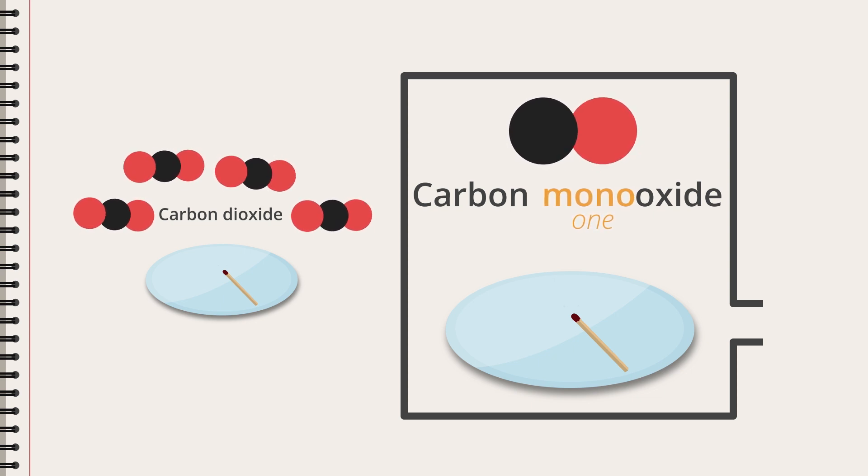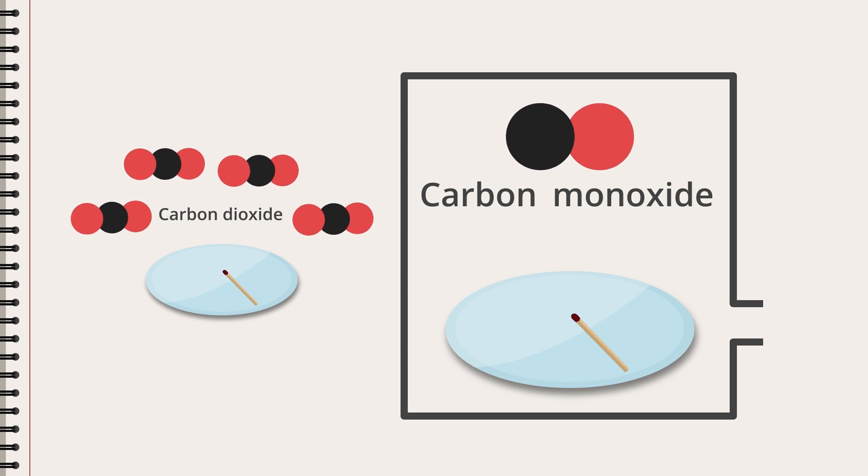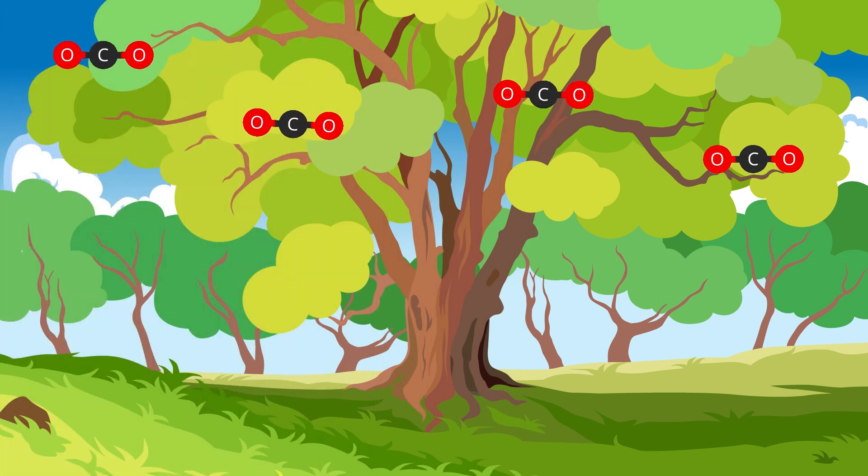The name of the compound is contracted from mono oxide to monoxide. Carbon dioxide and carbon monoxide—they sound almost the same and both are made up of carbon and oxygen, but there is an important difference between them.